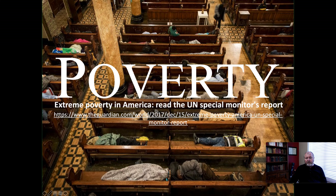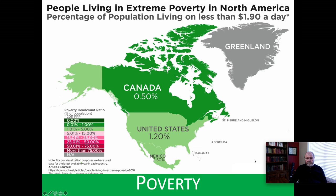Extreme poverty in America — let's look at that. Read the United Nations Special Monitor's report, and I will provide the website for a number of resources as we go through this presentation. People living in extreme poverty in the United States — that is on less than $1.90 per day — you can see that in the U.S. it is virtually zero. In Canada, half of 1% live in truly extreme poverty. The picture of the U.S. and Canada is far better than it is across most of the world.